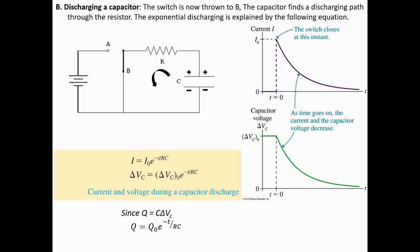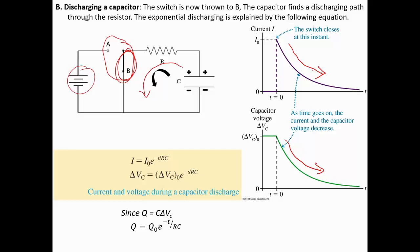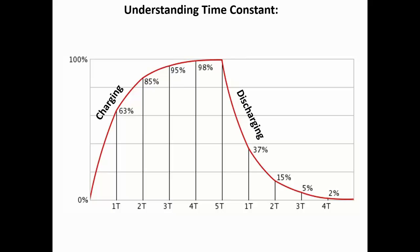Similarly, once the capacitor is fully charged, you can discharge it by throwing the two-way switch to position B. This isolates the battery, and the charged capacitor discharges through the resistor as heat dissipation. During discharge, the voltage across the capacitor decreases exponentially with time, and the charge and current also decrease exponentially. These are the corresponding formulas for how current, voltage, and charge decay.